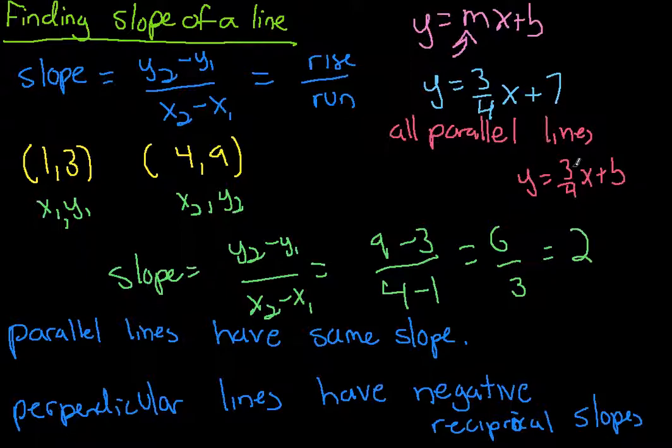If they're parallel, they have the same slope, they never touch. But the b value has to be different so that they aren't the same line. So y equals 3/4 x plus 10 would be parallel. Y equals 3/4 x minus 7 would be parallel. But y equals 3/4 x plus 7 would be the same line.